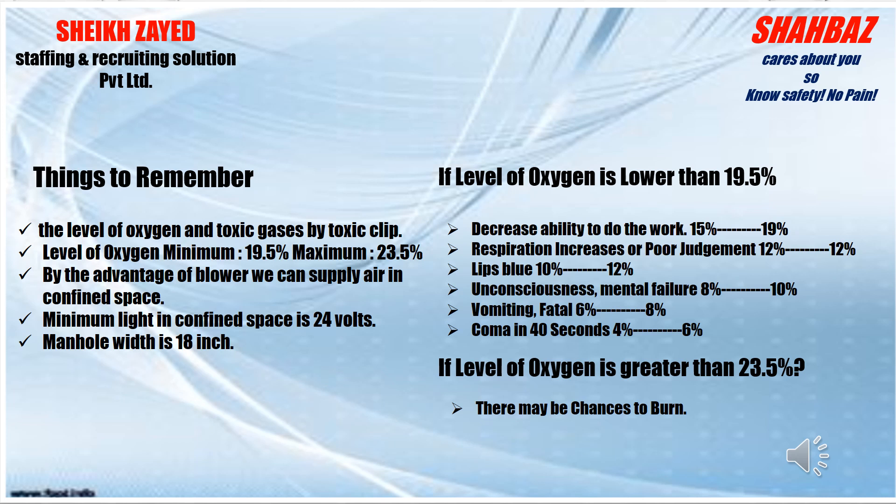Regarding oxygen and toxic gas levels: the minimum required oxygen level is 19.5% and the maximum is 23.5%. Using a blower, we can supply air into the confined space. Minimum light voltage is 24 volts and manhole width is 18 inches. If oxygen drops below 19.5%, work ability decreases. At 15–19%, judgment is impaired. At 12%, respiration increases and poor judgment occurs. At 10–12%, lips turn blue. At 8–10%, unconsciousness and mental failure occur. At 6–8%, vomiting and fatality are possible. At 4–6%, coma can occur within 40 seconds. If oxygen exceeds 23.5%, there is a risk of fire or burn.